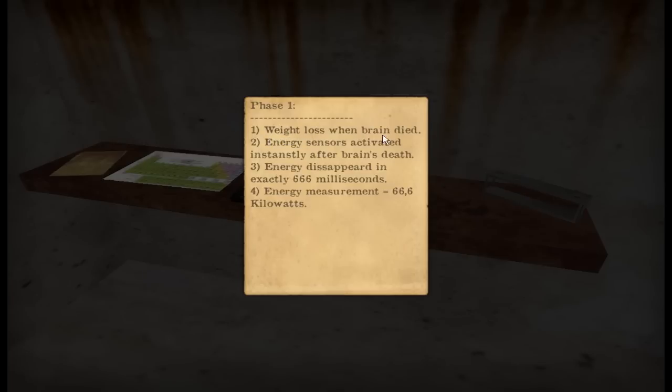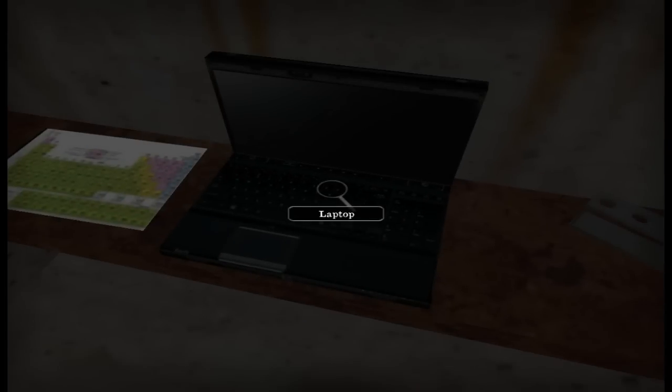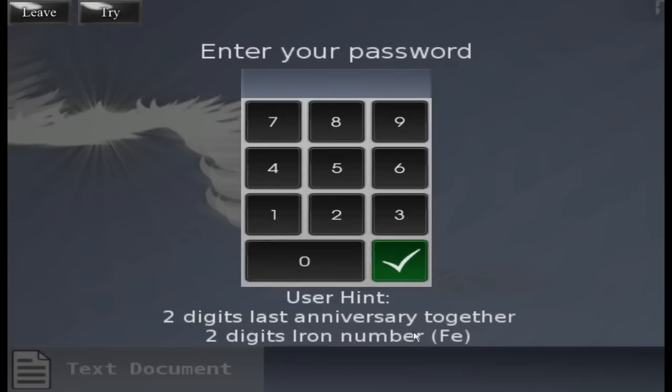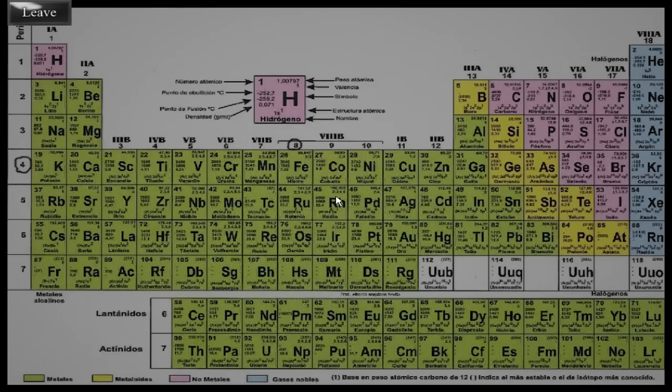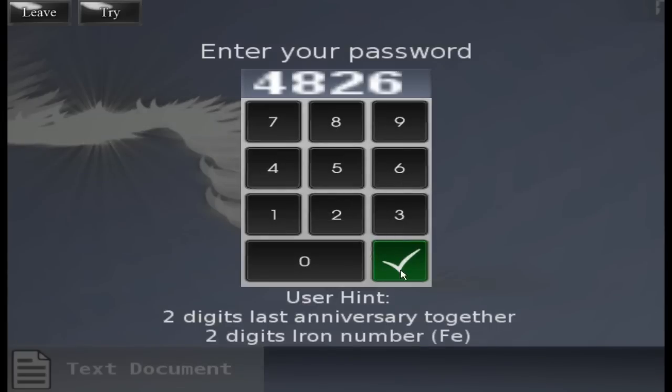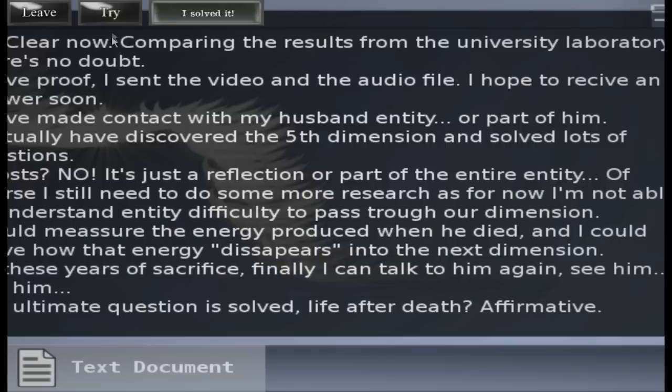But first, we are going to read experiment phase one. Phase one. Number one. Weight loss when brain died. Energy sensors activated instantly after brain's death. Energy disappeared in exactly 666 milliseconds. Ha ha. Energy measurement 666.6 kilowatts. Ha ha. Laptop. It doesn't turn on. Seems a battery is missing. Okay, let's put this in there. Two digits last anniversary together. Two digits iron number. Okay, FE. What is FE again? I forget. Oh. The answer's already here on the periodic table. So 48 and 26. I think it's that makes sense. Yeah. So 48, 26. 4, 8, 2, 6. Check. Try. Right. Hey! I solved it.